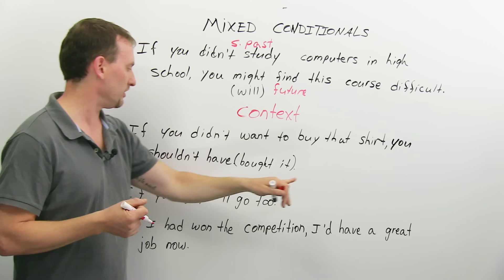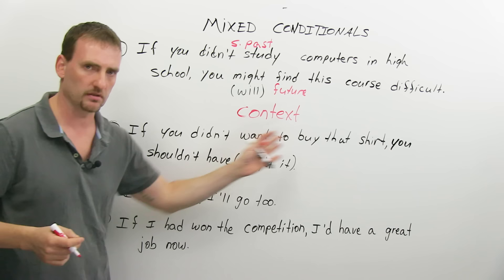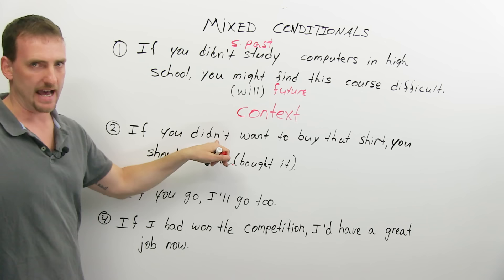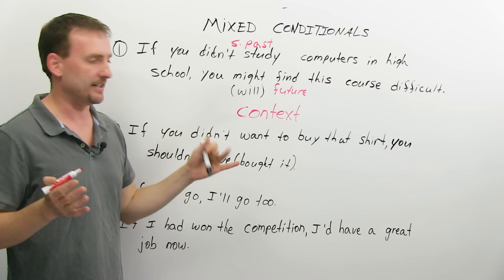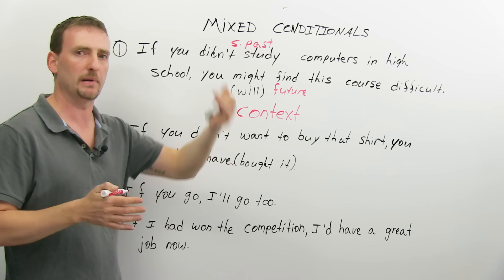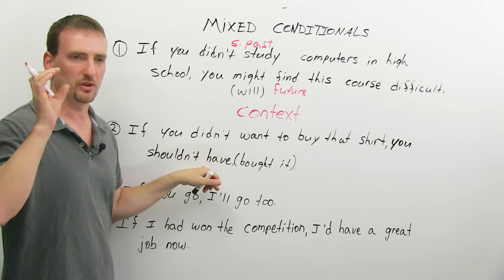So, simple past with future. And I use might. Might generally talks about the future. I could use will as well with this. So, this is one example of a mixed conditional. And again, in context, you understand that the person is starting this course now without the background information, so it should be pretty clear. Let's look at the next example. If you didn't want to buy that shirt, you shouldn't have bought it.